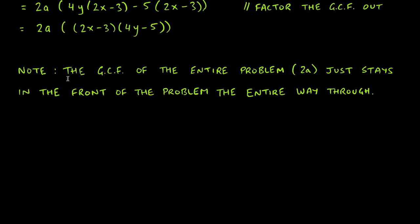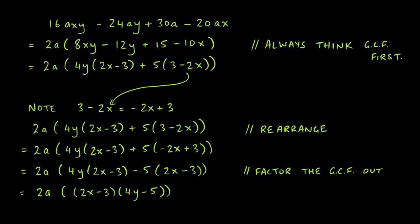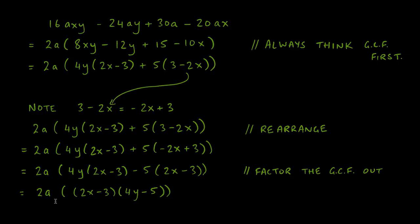One important note: the GCF of 2a stayed at the front the entire time and never disappeared. A very common mistake is assuming the GCF cancels out or vanishes after being factored out — it doesn't. Any GCF you factor out always stays at the beginning of the expression. It does not vanish. If you have any questions about grouping, please reach out.